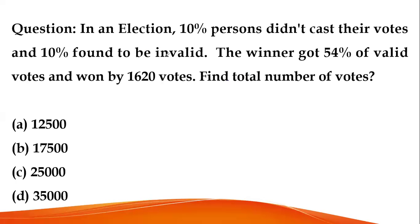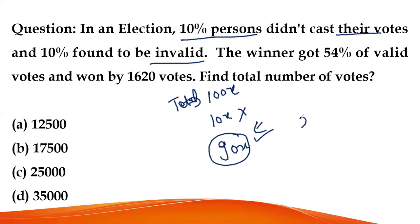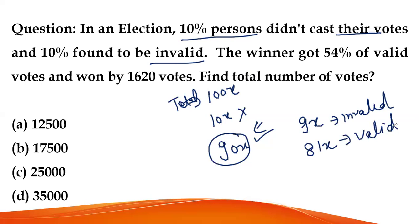In an election, 10% of persons didn't cast their votes. Total votes = 100x, so 10x people did not vote, meaning 90x people voted. Of those, 10% were found to be invalid — so 9x votes are invalid. Valid votes are therefore 81x.